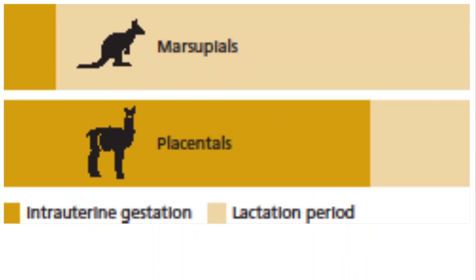An important topic we covered at some length was that marsupials have very short intrauterine periods. In placental mammals, the embryo spends quite a long time inside the uterus, followed by a period of lactation. In marsupials, the amount of time spent in the uterus is very short — most of the time is spent in the pouch being nursed at the nipple. One thing marsupials did not solve is the immunological problems associated with keeping a foreign object inside the body.